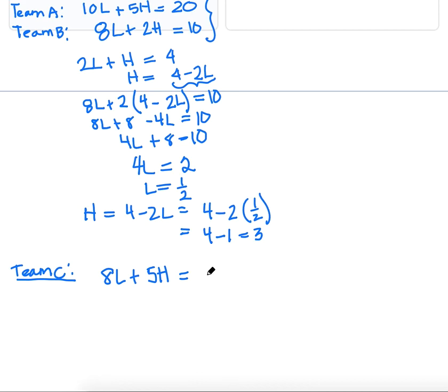We said that L had to be 1 half, so that's going to be 8 times 1 half, plus 5 times H is 3. Now it's just a simple calculation. 8 times 1 half is 4, 5 times 3 is 15. So it looks like Team C had a total of 19 points.